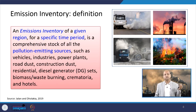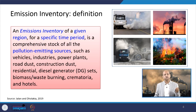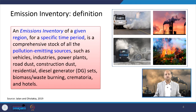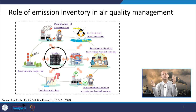Sources include vehicles, industries, power plants, road dust, construction dust, residential emissions, diesel generators, biomass burning, waste burning, hotels, and commercial activities. From every source you get emissions, you sum up, develop the emission inventory, and use it for air quality modelling. The emission inventory can be expressed as total emissions per unit of time, like gigagram per year, but you may also want a grid-based emission inventory, which is important for air quality modelling.